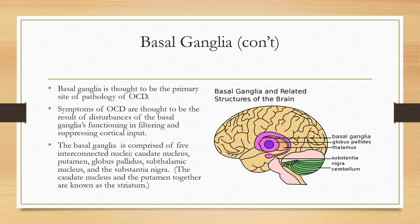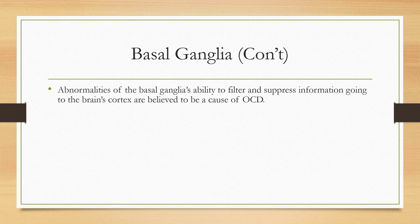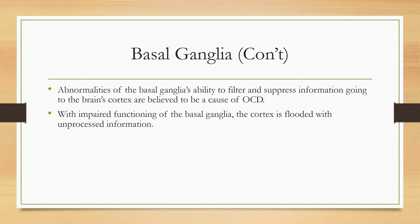The five nuclei are the caudate nucleus, the putamen, the globus pallidus, the subthalamic nucleus, and the substantia nigra. The caudate nucleus and the putamen together are known as the striatum. Abnormalities of the basal ganglia in its ability to filter and suppress information going to the brain's cortex are believed to be a cause of obsessive-compulsive disorder.